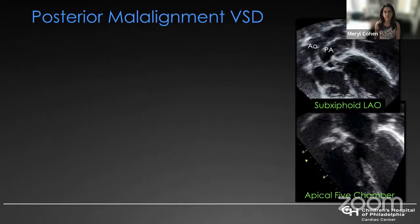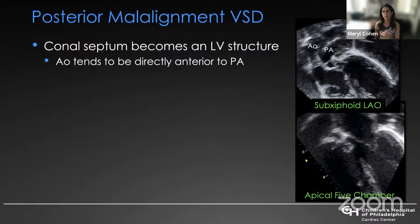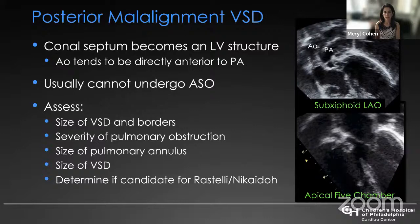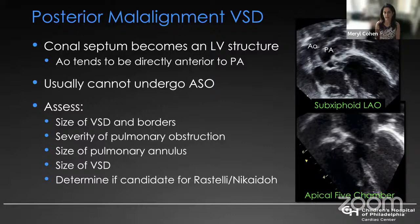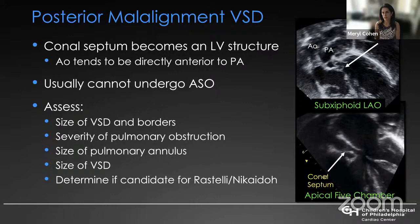The outlet VSD is when the infundibular septum or conal septum is small or absent; typically the aortic and pulmonary valves are in fibrous continuity. This is important for the surgeon to recognize because they may want to approach this VSD through one of the outflows rather than through the tricuspid valve. Because there is no conal septum, only fibrous tissue, they may cause some damage to the semilunar valves while closing the VSD. Posterior malalignment VSD is when the conal septum becomes an LV structure, and these patients typically cannot undergo an arterial switch because the pulmonary outflow is small.